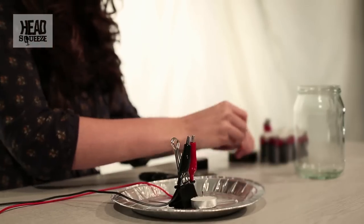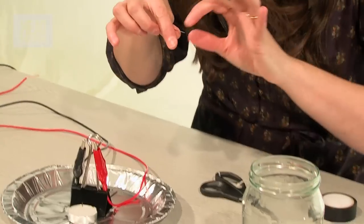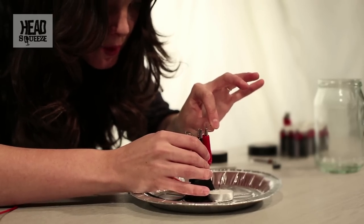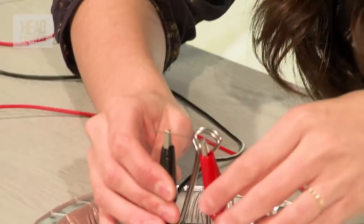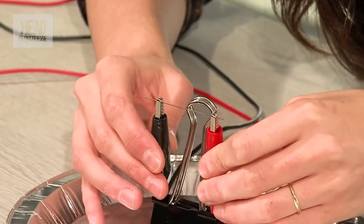So what we're going to be doing is running electricity through one of these pencil leads. Now these pencil leads are notoriously thin. So you want to put it in on one side, clip it, and on the other side, clip it.